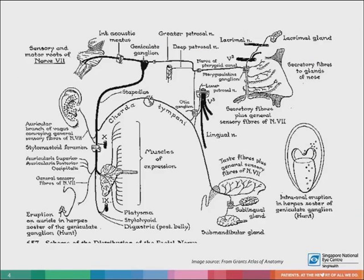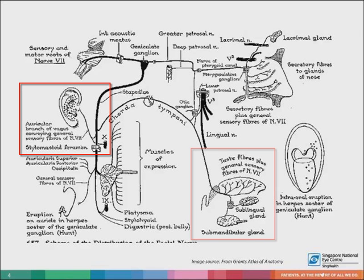This picture shows an overview of the distribution of the facial nerve. In particular, herpes zoster affecting the facial nerve, which we call Ramsay Hunt syndrome, can result in zoster eruptions in the ear as well as in the mouth.